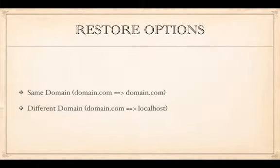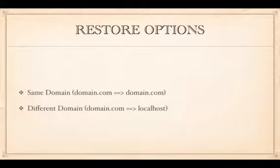Option two is restoring your WordPress backup to a different domain. For example, you move from domain.com to localhost on your local machine, or the reverse — you developed locally and now it's time to go live. The process is mostly identical, apart from a couple of tweaks at the end to tell WordPress it's now living somewhere else.